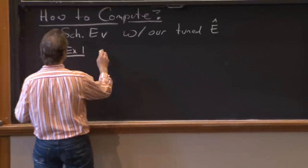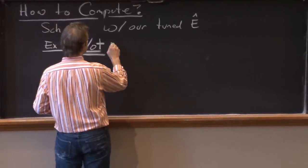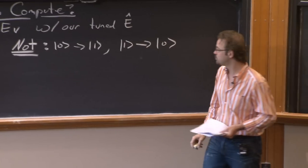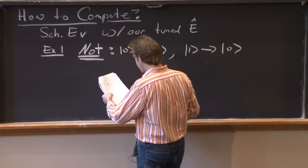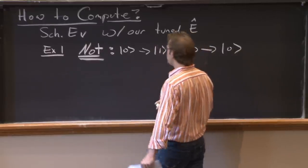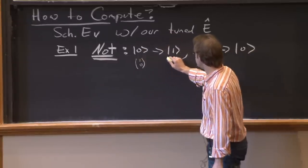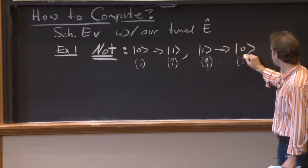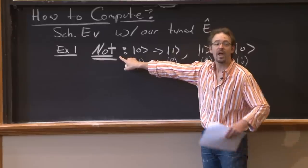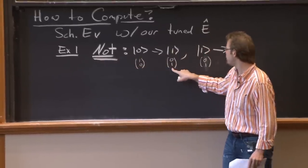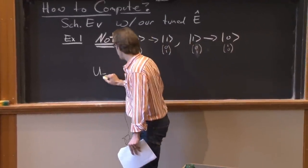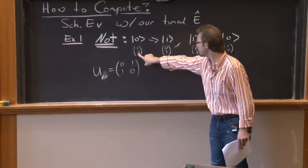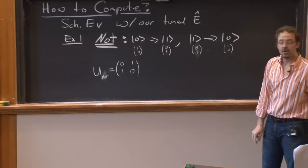So let's see what using entanglement gives us for computation. Computing is Schrödinger evolution with a chosen, tuned energy operator. For example, I want to build a NOT gate. NOT takes state |0⟩ and gives |1⟩, and takes state |1⟩ and gives |0⟩. If I realize 0 as the vector (1,0) and 1 as (0,1), then the NOT operation must be the matrix (0,1; 1,0). This takes (1,0) to (0,1) and vice versa.